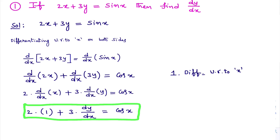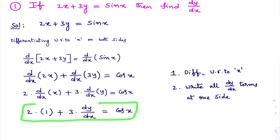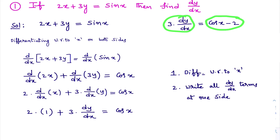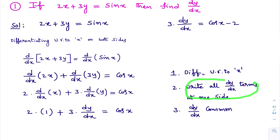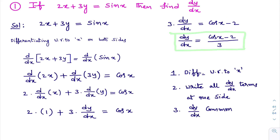I've differentiated the given equation with respect to x on both sides. Now for the second step: write all dy/dx terms at one side. The term 3 × dy/dx I keep on one side; remaining terms go to the other side. So: 3 × dy/dx = cos x − 2. For the third step, take dy/dx common — here there is only one dy/dx term, so directly: dy/dx = (cos x − 2) / 3.